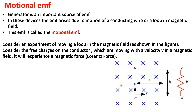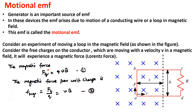The cross symbols indicate that the magnetic field is directed into the page. If this loop is moving with some velocity v towards the right, then the charges in the conductor will experience a magnetic force, known as the Lorentz force. The magnetic force is q(v × B). Because v and B are perpendicular — v is horizontal and B is into the page — the angle is 90 degrees, so F = qvB sin90 = qvB.